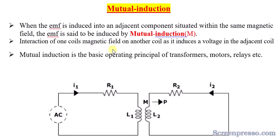When an EMF is induced into an adjacent component situated within the same magnetic field, the EMF is said to be due to mutual induction. We apply an AC voltage to the first circuit, and because of the induction generated, an EMF is induced in the adjacent circuitry — circuit two, which is adjacent to circuit one. Both are situated in the same magnetic field, and the induced EMF is called mutual induction. It is denoted by capital M.